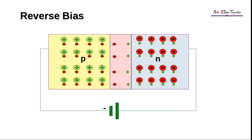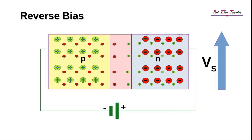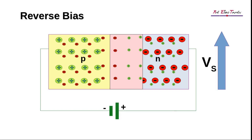Let's see what happens when the same diode is connected in reverse bias. In reverse bias, the diode's P side is connected to the negative side of the source and the N side is connected to the positive side. Increasing the source voltage will cause the holes to be attracted to the negative side of the source terminal and the electrons to be attracted to the positive side. By forming new ions in the depletion region, the barrier potential increases.